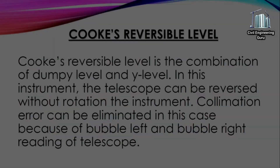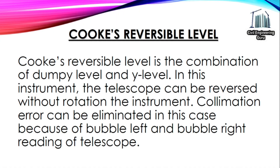Cook's reversible level is a combination of the dumpy level and Y-level. In this instrument, the telescope can be reversed without rotation. The collimation error can be eliminated because of the bubble-left and bubble-right readings of the telescope.